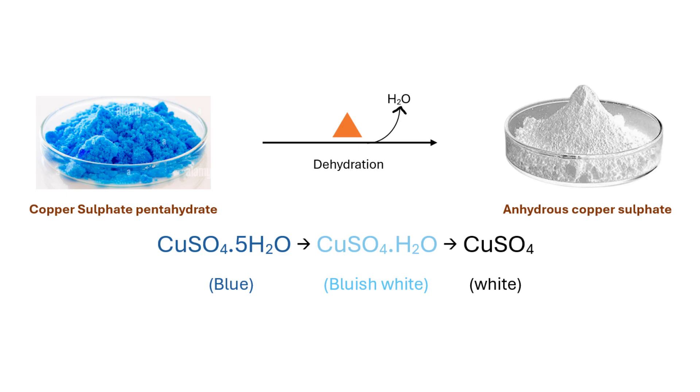Copper sulfate that had already lost all of its water of crystallization is white in color and is commonly known as anhydrous copper sulfate. If anhydrous copper sulfate is allowed to cool in air, it regains all of its water of crystallization and becomes blue again.